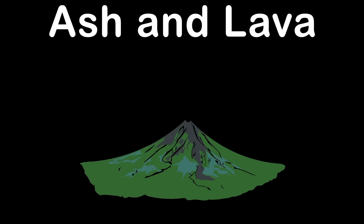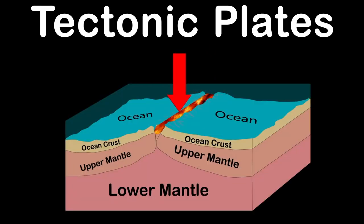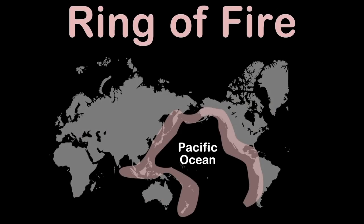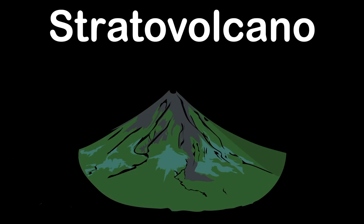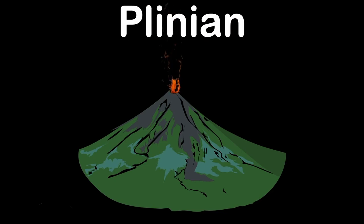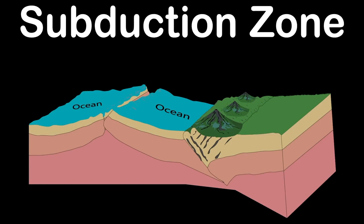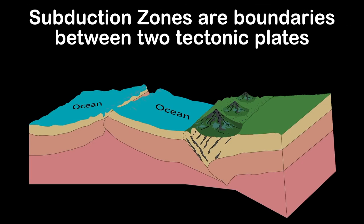Most active volcanoes occur at boundaries between tectonic plates. Most are found in the Ring of Fire that encircles the Pacific Ocean. The stratovolcanoes are the most destructive. Their common type of eruption is called Plinian, which is highly dangerous and explosive. Stratovolcanoes are most commonly found in subduction zones. Subduction zones are boundaries between two tectonic plates where the ocean plate is sinking into the mantle beneath another tectonic plate.